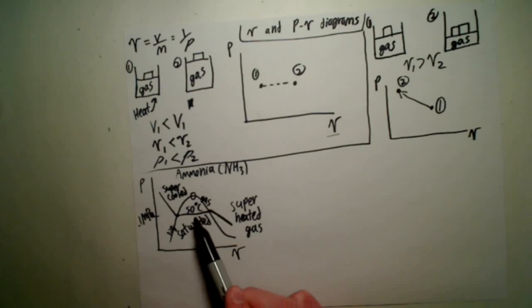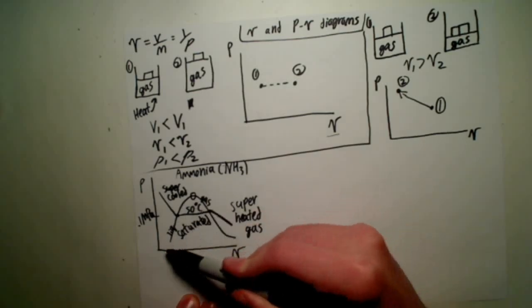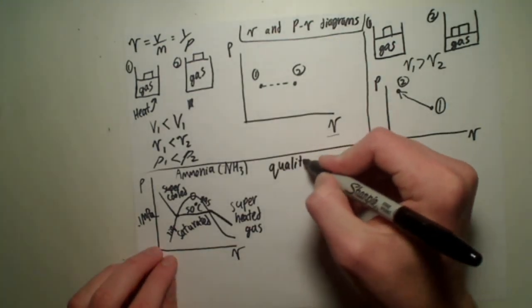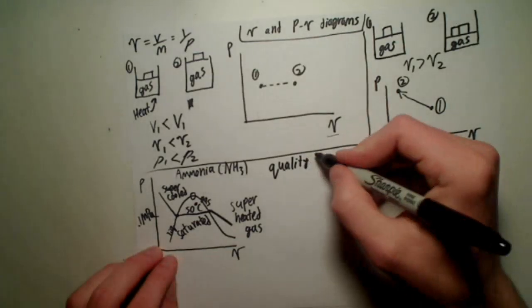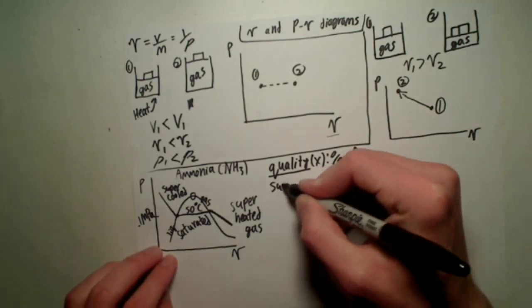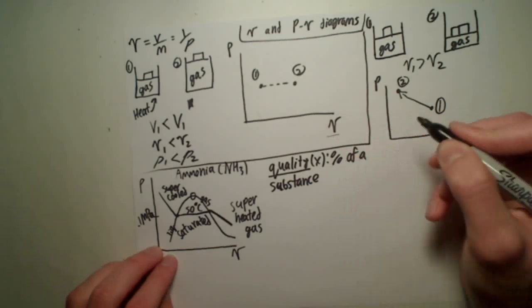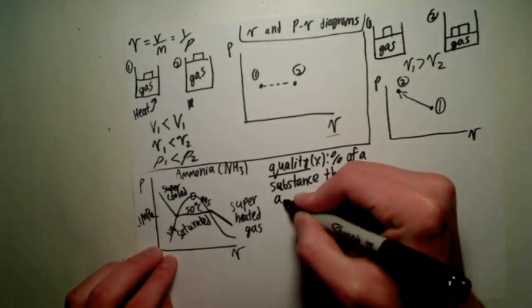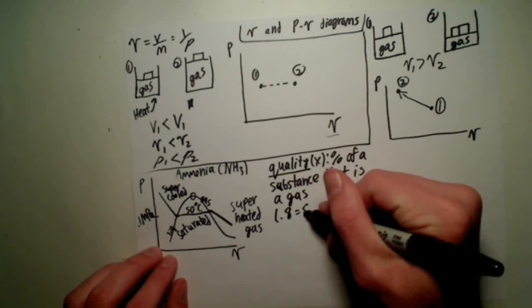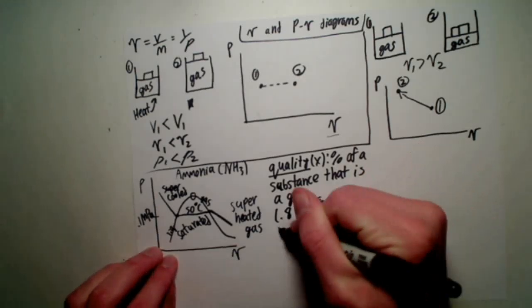And like I said before, while we're inside this vapor dome, this is what we call it, a vapor dome, we say the substance is saturated. Now what that means, it's just a mixture of a liquid and a gas. But if I wanted to give a value to tell me how much gas versus liquid we would have, I would use something called a quality. Now a quality is a thermodynamic property, and we denote that with the letter x, which is simply the percentage of a substance that is a gas. So if I had a quality of 0.8, that means I have 80% gas and 20% of it is liquid.